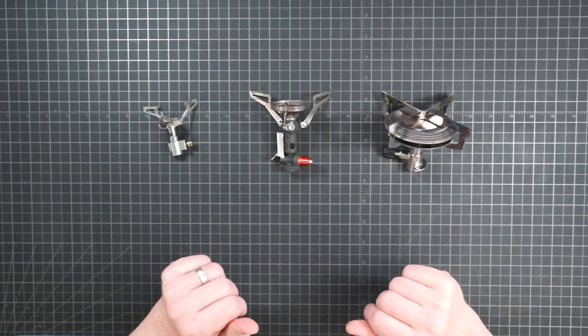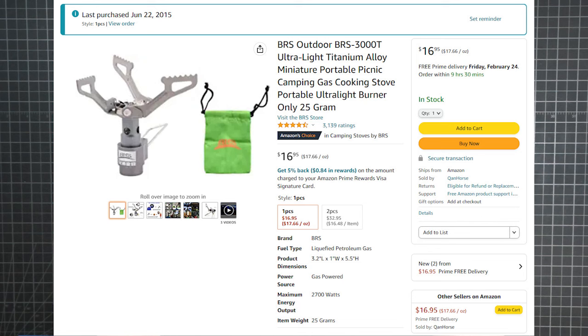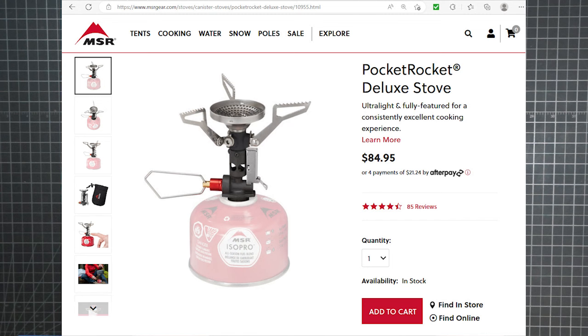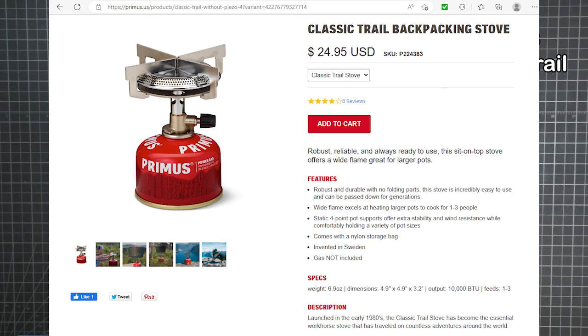So that led me to adopt a small, medium, large format for stove selection. For the small burner, I chose the BRS3000T. It's super popular with ultralighters. It is, to my knowledge, still the lightest canister stove you can buy. In the medium category, I went with the MSR Pocket Rocket Deluxe. Also very popular, it's a multiple award winner of excellent quality. And for the large one, I picked the Primus Classic Trail Stove.